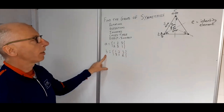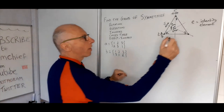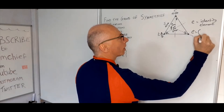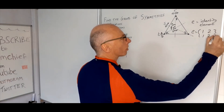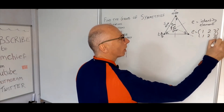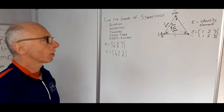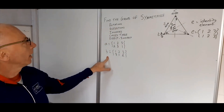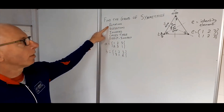Now the identity element — I'll just write that over here because it's the trivial one. Basically one, two and three ends up at one, two and three. Nothing will change. So that's the rotations taken care of.